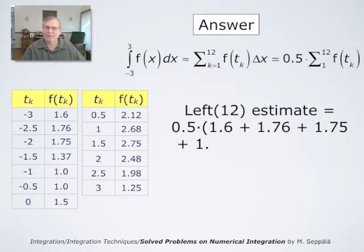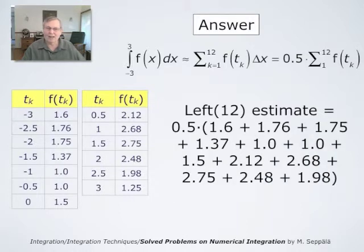And the values f at tk can now be read of this table. So left 12 estimate is 0.5 times the sum of the values of f up to this last value corresponding to tk being 2.5, we get 1.98. The value corresponding to tk being 3 does not enter this picture, because it is the right endpoint of the last interval. Therefore, it is not in the left-end approximation.